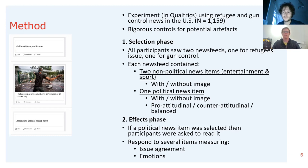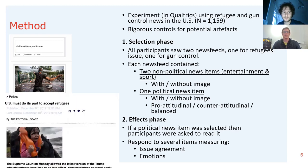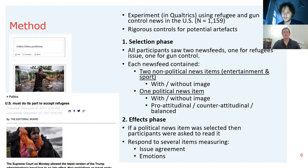For people who did select a political news item, they read an article — you can see an example in the bottom left-hand side of the screen. This article is about positive representations of refugees. When participants read this, they were asked to respond to several items measuring issue agreement — that is, agreement with the stance presented in the article — and also their emotions felt when reading the article.